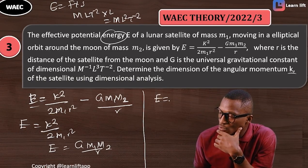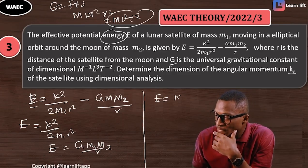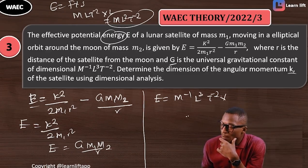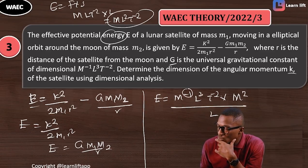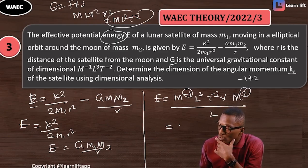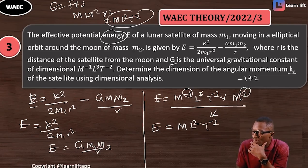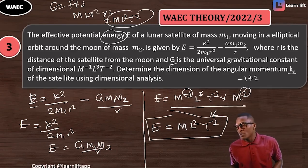Let's verify using E = Gm₁m₂/r. G is given as M⁻¹L³T⁻². Multiplying G × m₁ × m₂ (each mass is M) over r (which is L): we get M⁻¹ · L³ · T⁻² · M² / L = M^(−1+2) · L^(3−1) · T⁻² = M¹ · L² · T⁻², which is ML²T⁻². This matches the dimension of energy, confirming our formula is consistent.